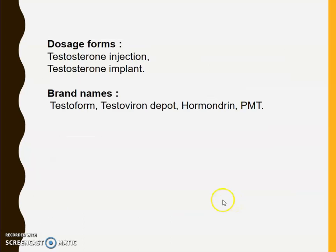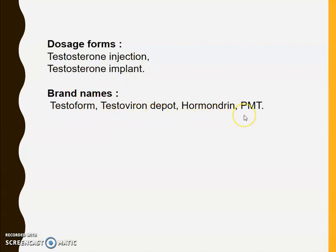Dosage form: Testosterone is available in the form of testosterone injection and testosterone implant. Brand names include Testoform, Testovirone, Depod, and Hermodrine PMT.